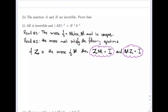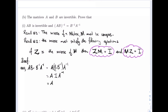We begin our proof. We take AB and multiply it by B inverse A inverse. This is equal to A times B times B inverse times A inverse. But B times B inverse is the identity, so we end up with A times I times A inverse, which gives us A times A inverse, which is equal to I.